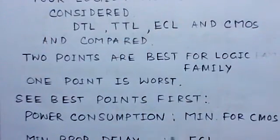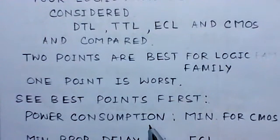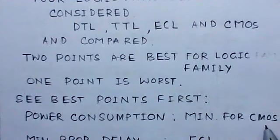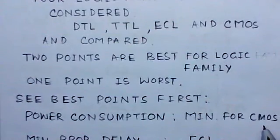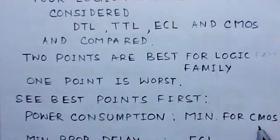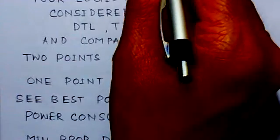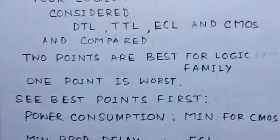From the point of view of power consumption, for minimum power consumption, CMOS is the best device because it has the minimum power consumption. So wherever power consumption is minimum, it corresponds to CMOS, which appears in column Q.